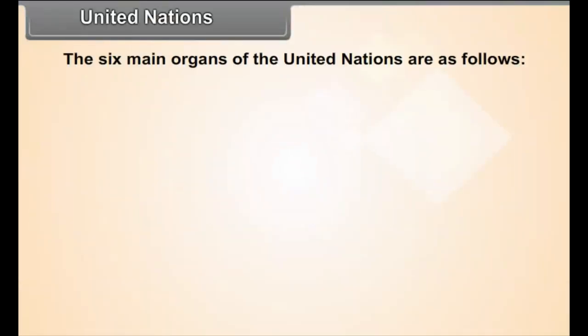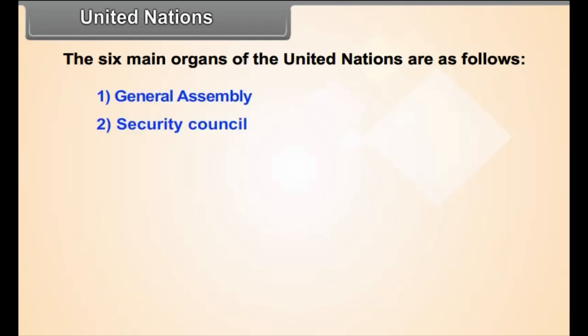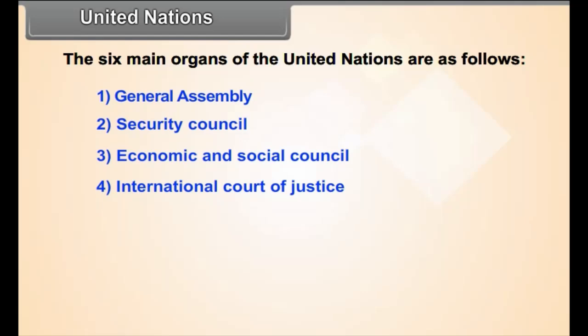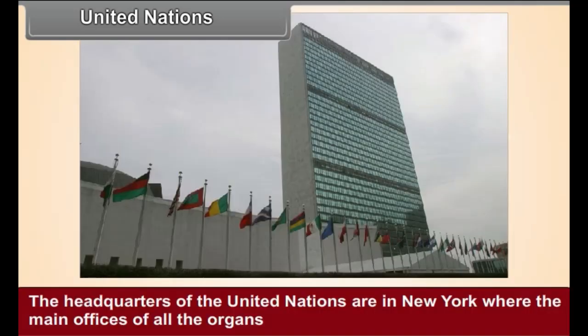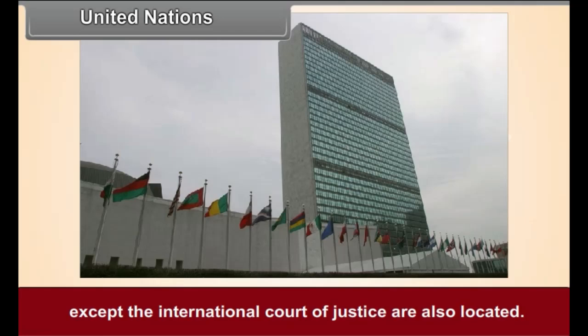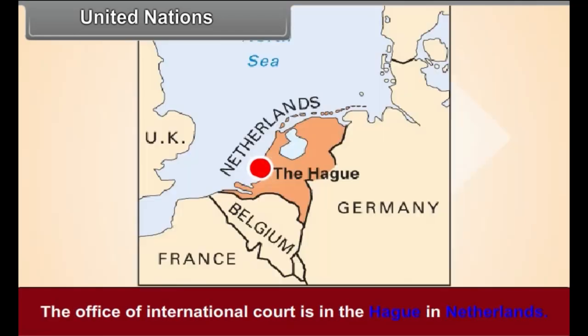The six main organs of the United Nations are as follows. The headquarters of the United Nations are in New York, where the main offices of all the organs except the International Court of Justice are also located. The office of the International Court is in The Hague in Netherlands.